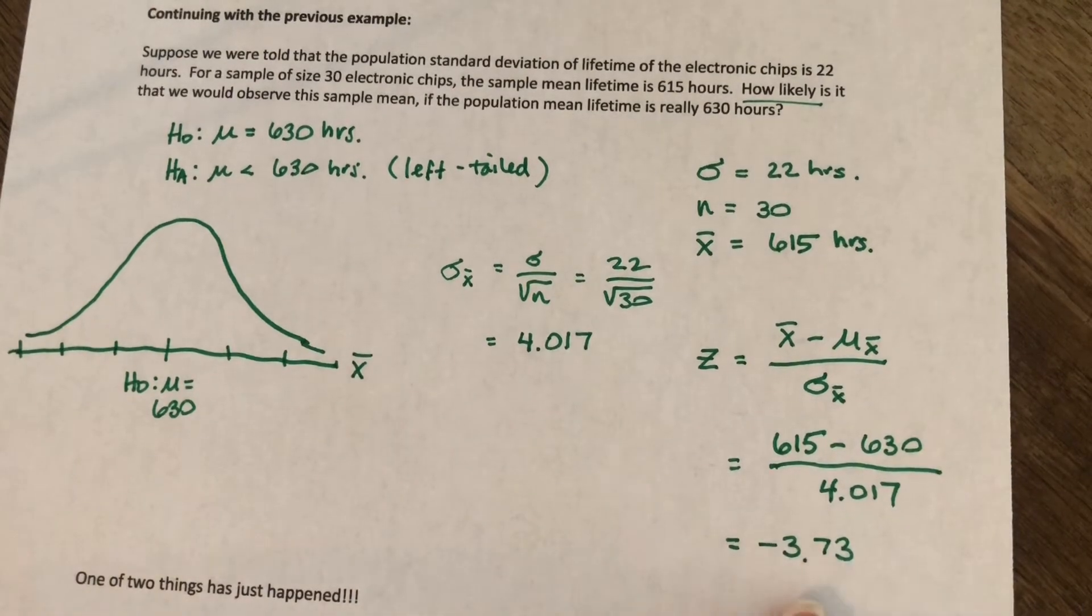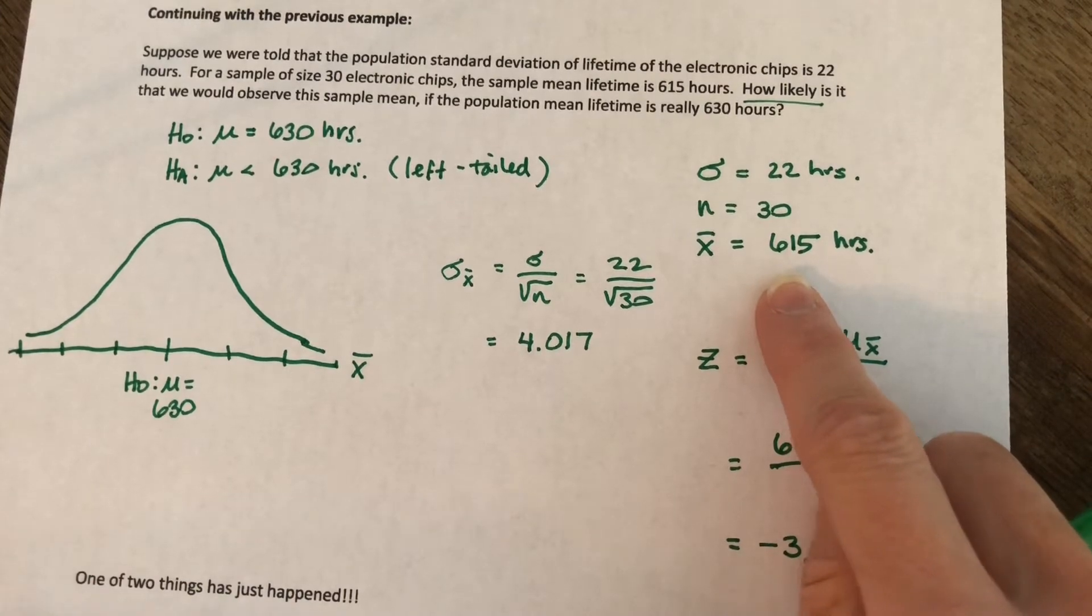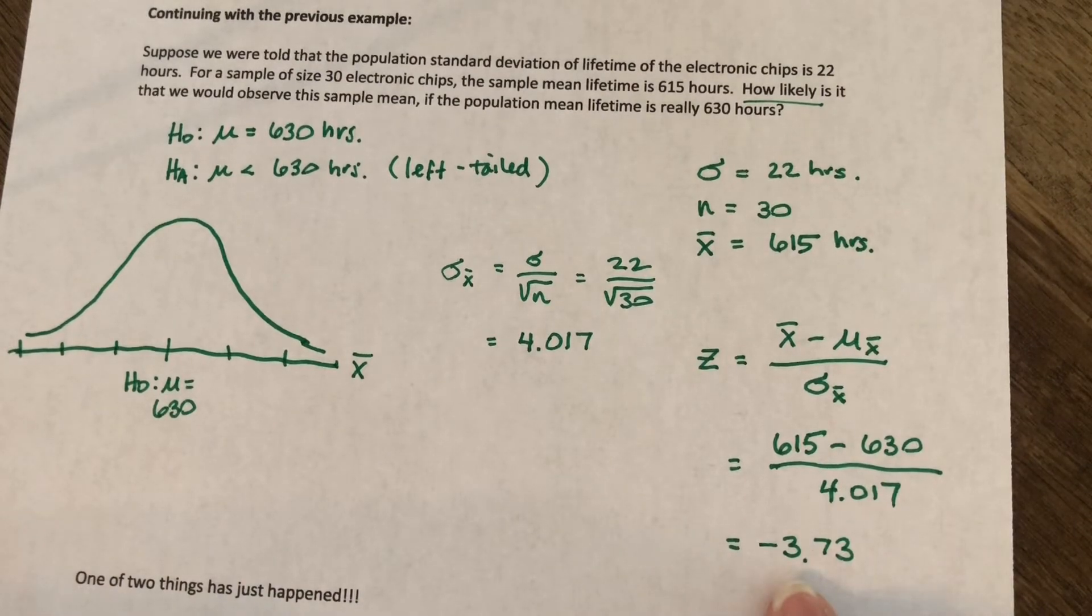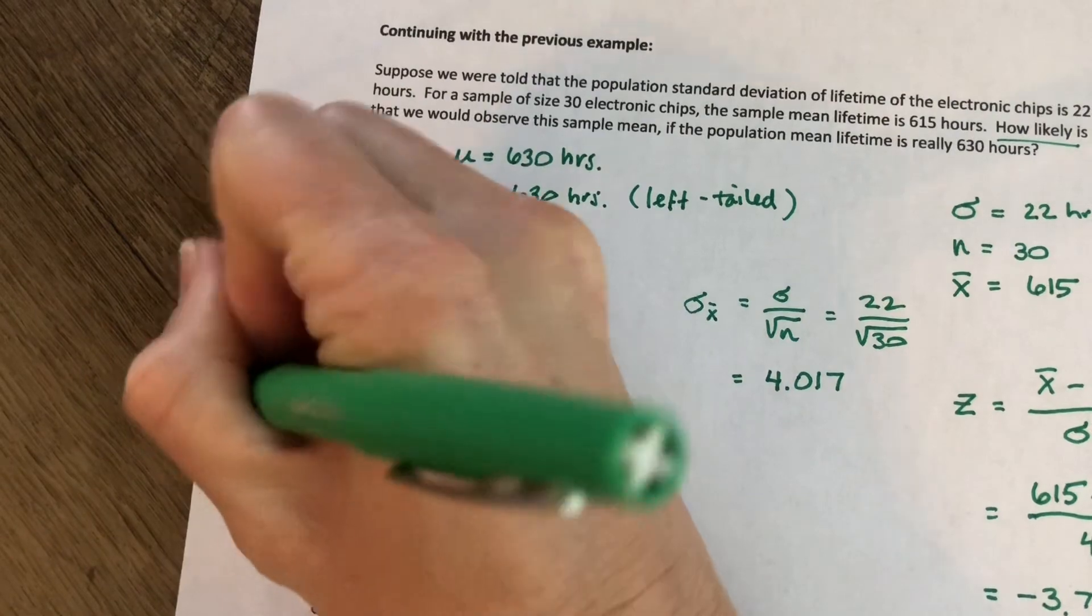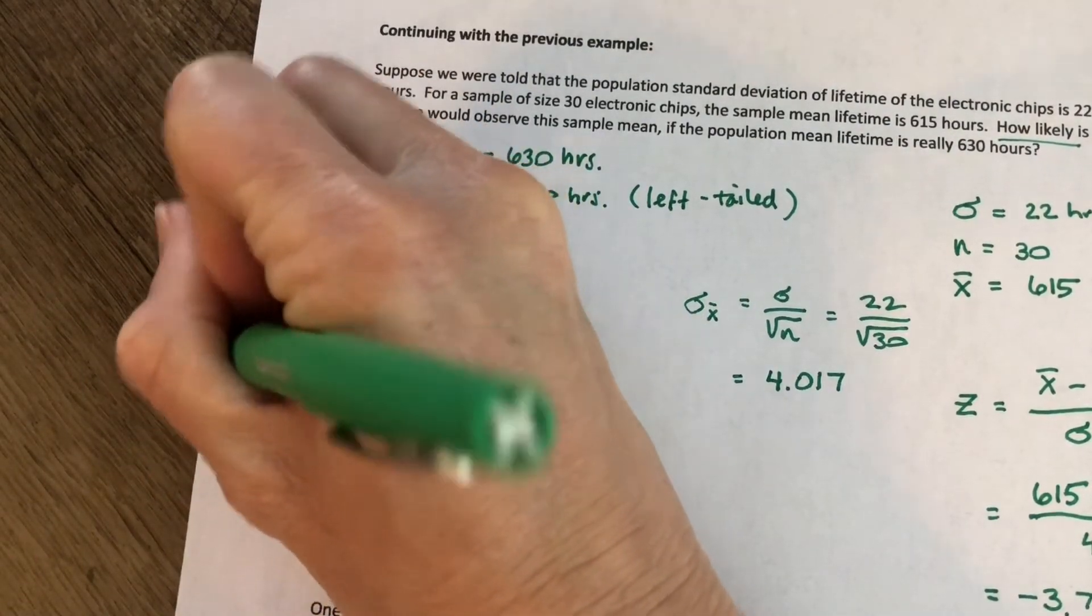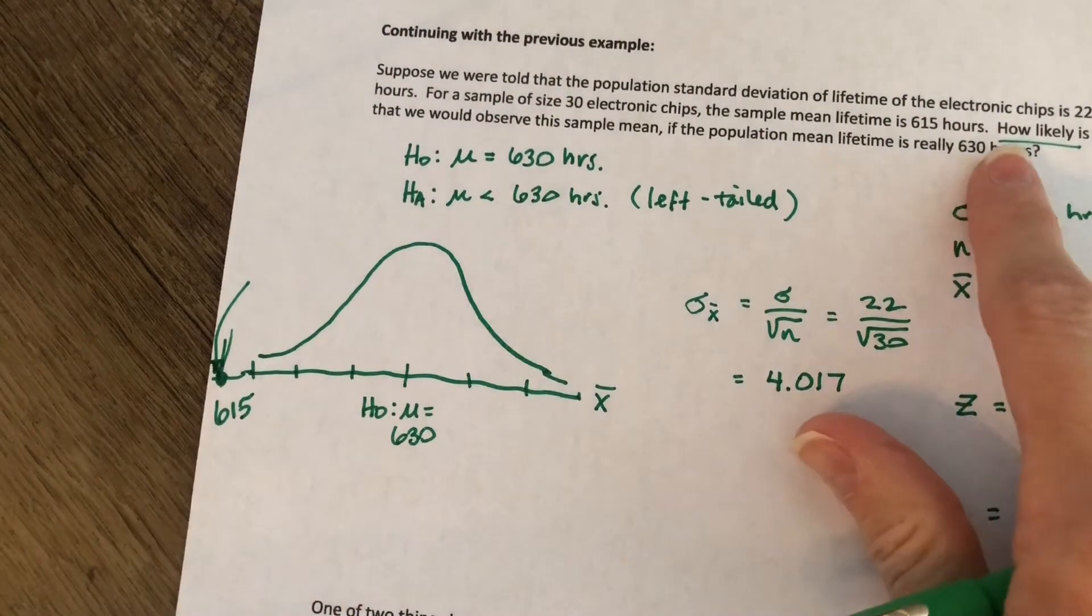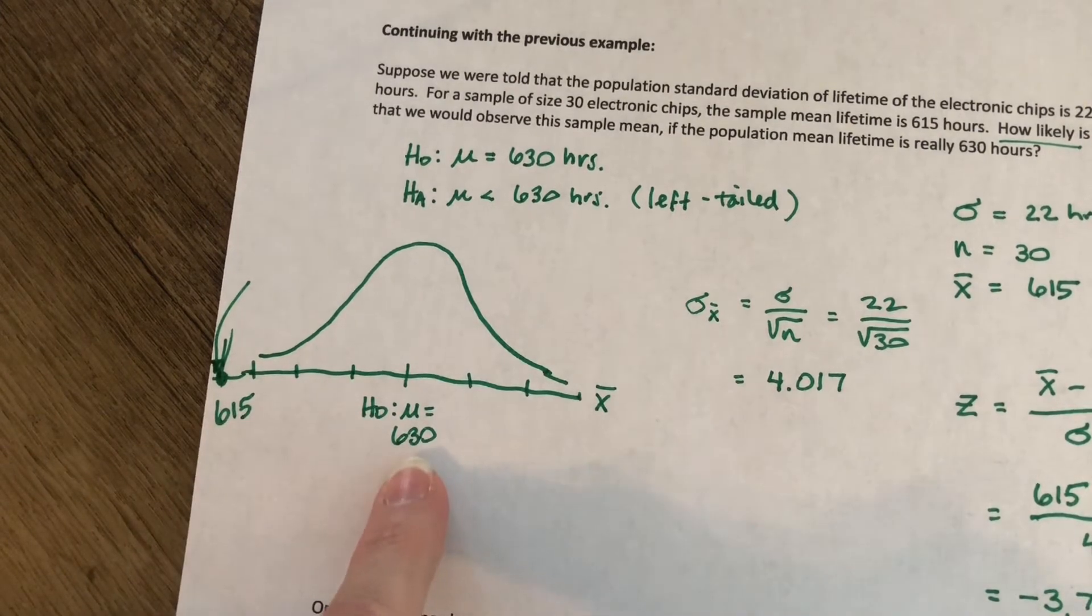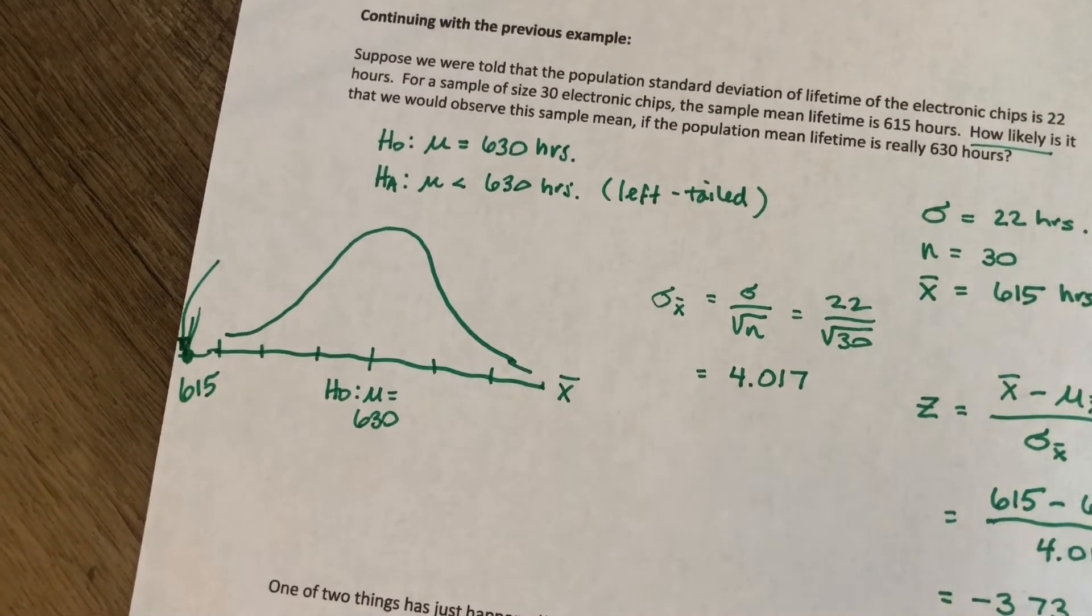And so if we do that calculation, we've got 615 minus 630 divided by 4.017 gives us negative 3.73. So remember, that's a z score. So what we're saying is that observing a sample mean of 615, if the true population mean is really 630, that's going to be three, almost four standard deviations below the mean. So we would be way down here by the time we were at 615.